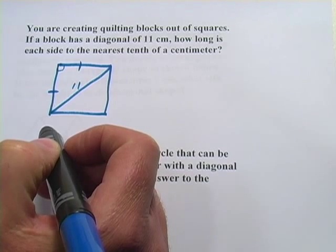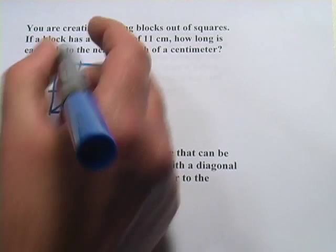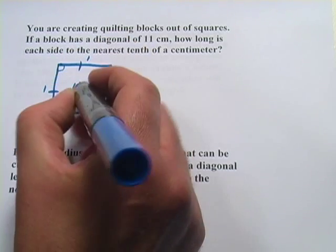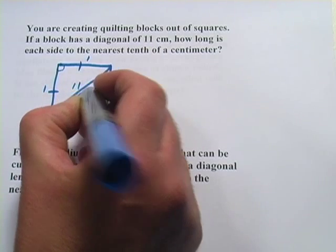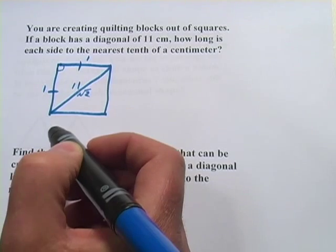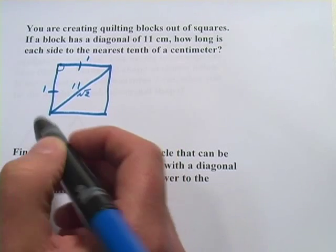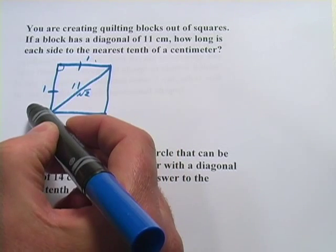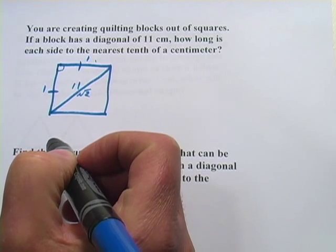And the 45-45-90 triangle has this ratio of sides. It's 1, 1, and square root of 2 for the hypotenuse. So we can set up a proportion here to figure out what one of these sides is. And that's what we're trying to find is the length of the side of the square.